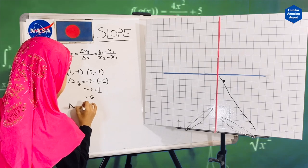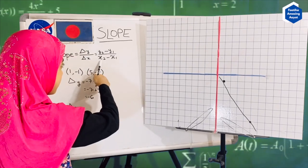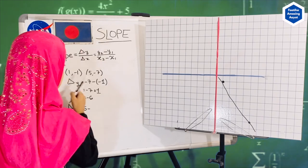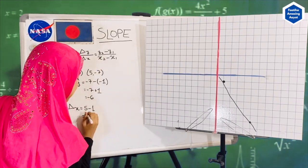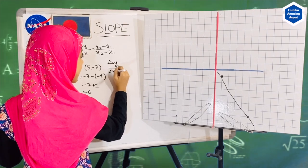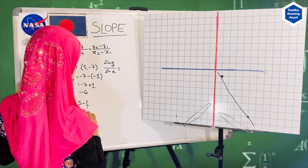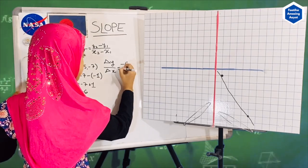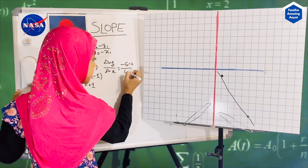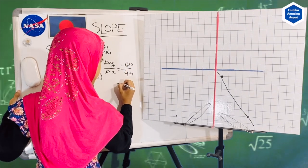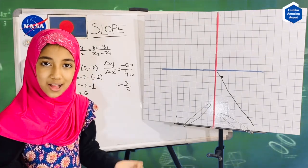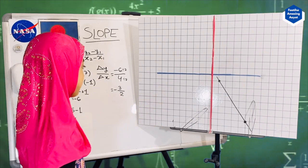Now let's figure out delta x. Delta x equals x2 minus x1, so five minus one equals four. Therefore, delta y divided by delta x equals minus six over four. Simplifying by dividing both by two gives minus three over two. So my slope is minus three over two.